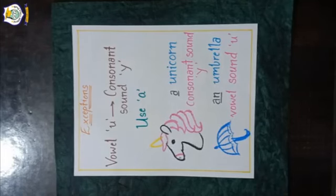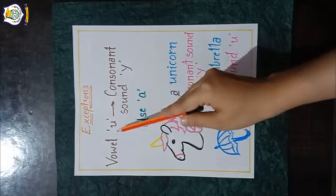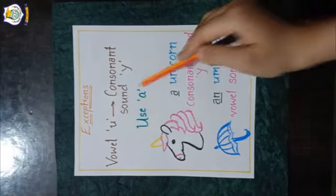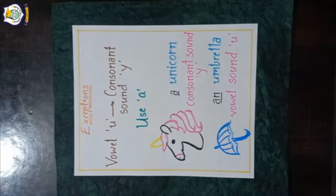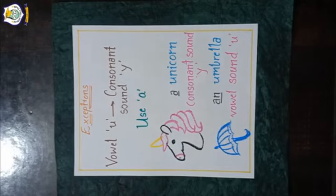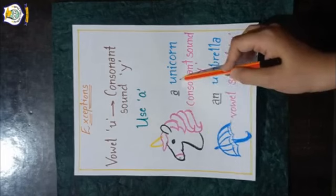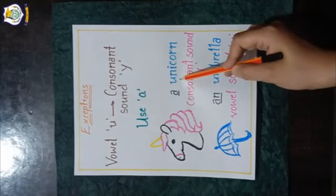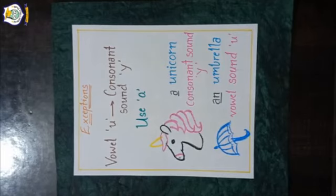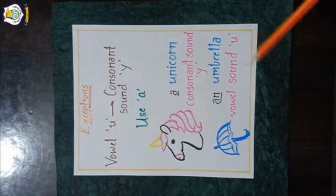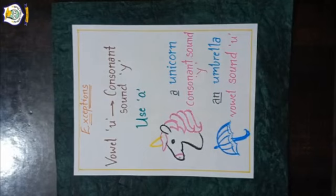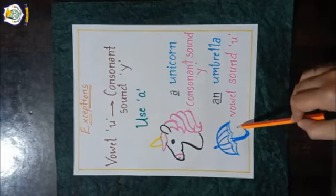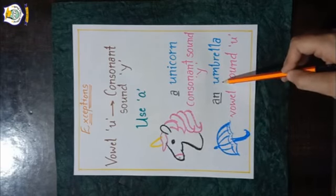Sometimes words that begin with the vowel 'u' have the sound of a consonant. For example, 'unicorn' — the vowel 'u' here has a consonant sound, like the letter 'y'. We say 'unicorn', so we use 'a' before it: 'a unicorn'. However, in the case of 'umbrella', it begins with the vowel 'u' but has a vowel sound 'u', so we use 'an' before it: 'an umbrella'.